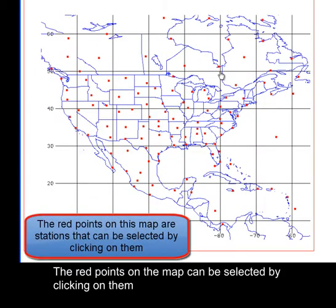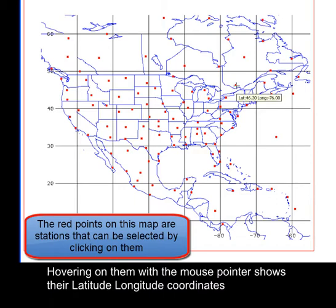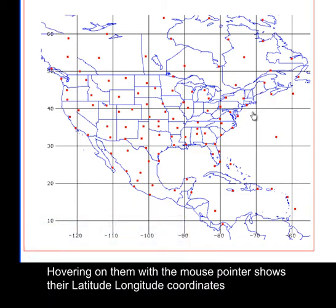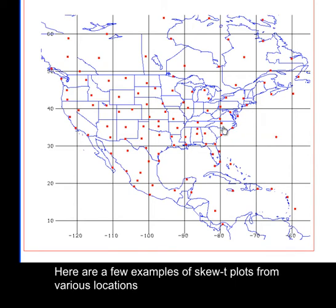The red points on the map can be selected by clicking on them. Hovering on them with the mouse pointer shows their latitude-longitude coordinates. Here are a few examples of SKU-T plots from various locations.